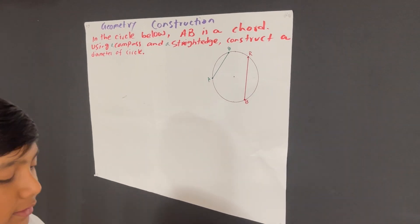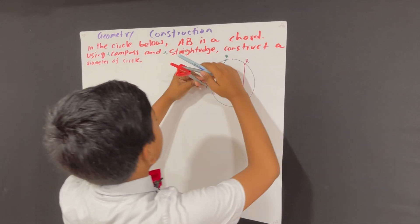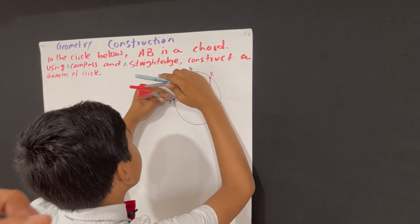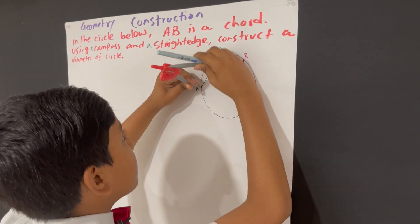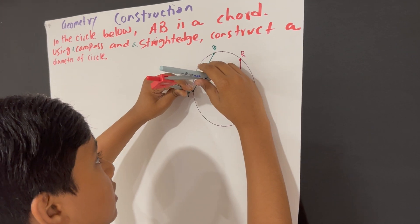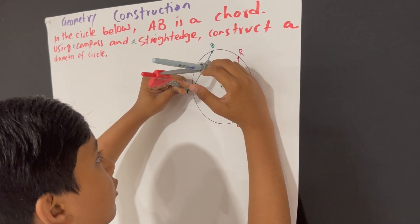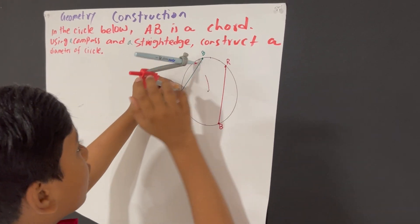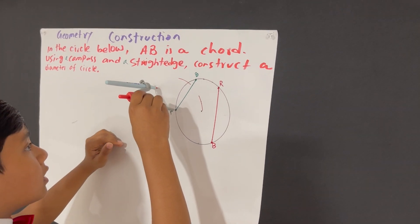Well, let me remind you. First, we're going to put our point on A. And then, we're going to make the radius over half of the length of AB. And then we're going to draw one arc above. And we're also going to draw another arc, below.